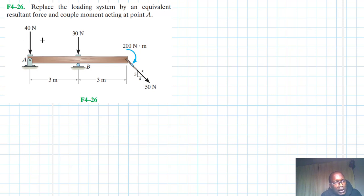Hello, I welcome you all to this another interesting screencast. The problem reads: replace the loading system by an equivalent resultant force and couple moment acting at point A. This problem is coming from the Engineering Mechanics Statics textbook, 13th edition, by R.C. Hibbeler.